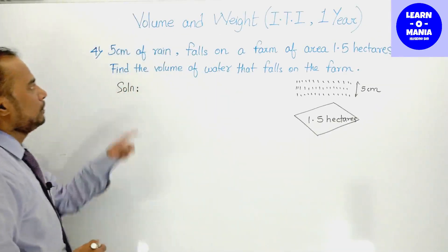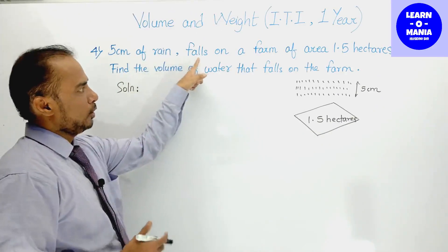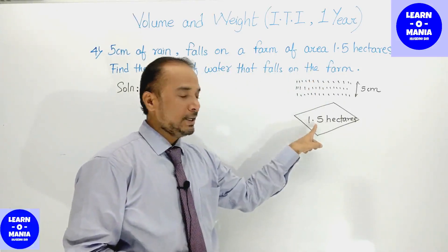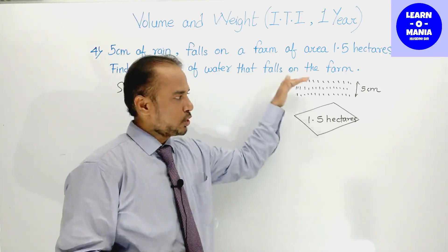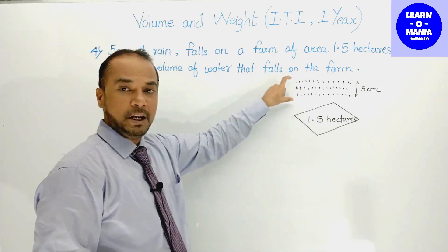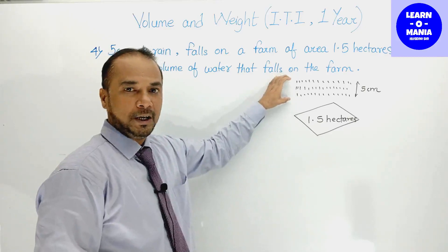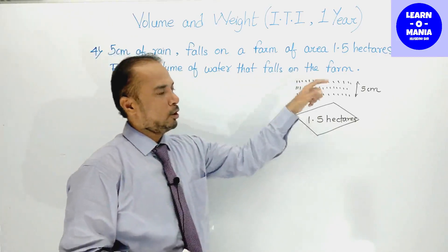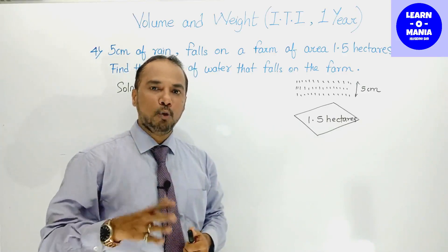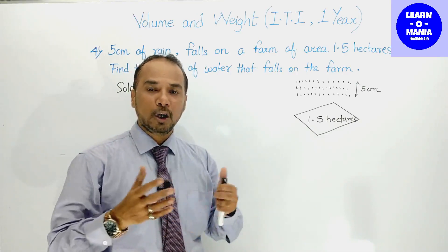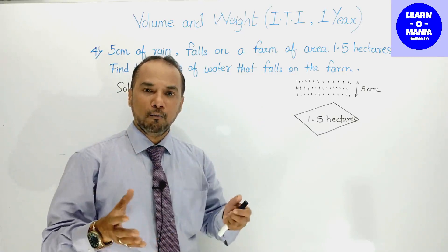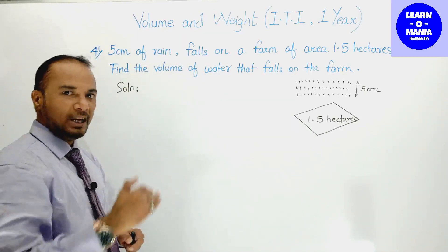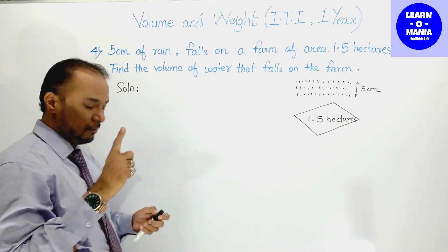Next sum: 5 cm of rain falls on a farm of area 1.5 hectare। Farm का area 1.5 hectare दिया हुआ है, और बारिश की height 5 cm है। हमें find करना है: कितना volume of water गिरा है। Solve करने के लिए सबसे पहले rainfall की height 5 cm को meter में convert करेंगे।